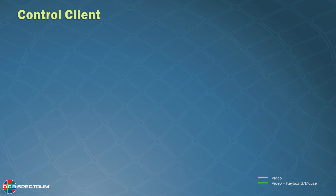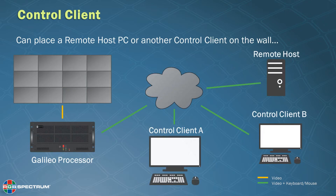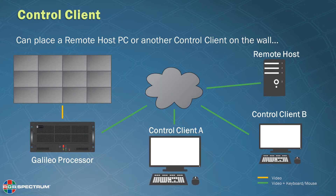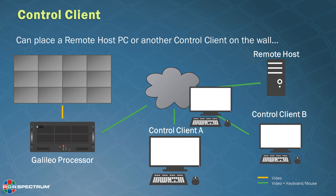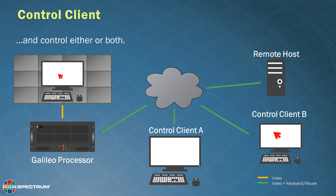Control clients can also place a remote host PC or another control client on the video wall for everyone to see. Control client A can drag and drop a remote host on the video wall, or they can also drag and drop control client B's screen to the wall, and if desired, use their own mouse and keyboard to manipulate control client B's PC.